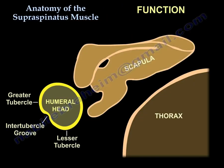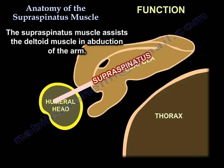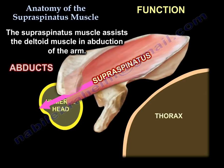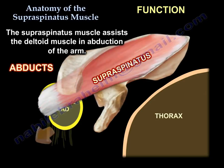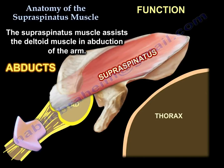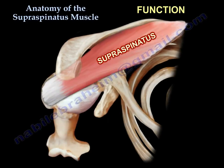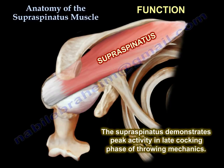Function: initiation and assisting of the deltoid in abduction of the arm. It also provides dynamic stability of the shoulder, and demonstrates peak activity in the late cocking phase of throwing mechanics.